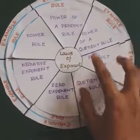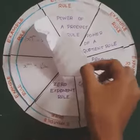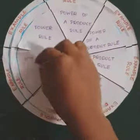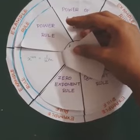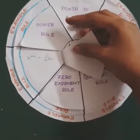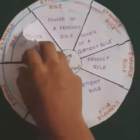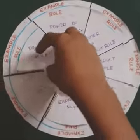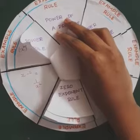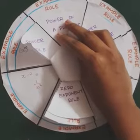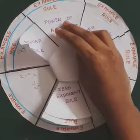Next is the negative exponent rule. Its rule is: x^(−m) = 1 / x^m. An example is x^(−2) = 1 / x^2.